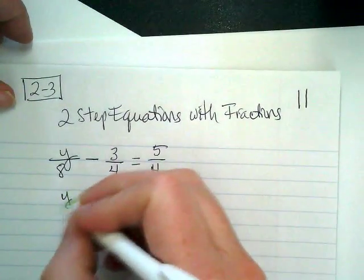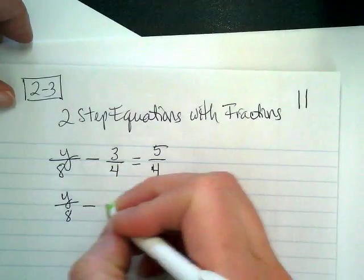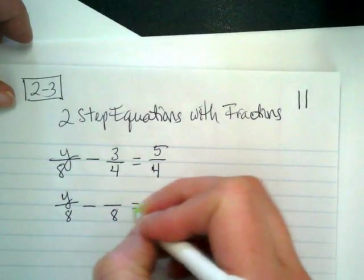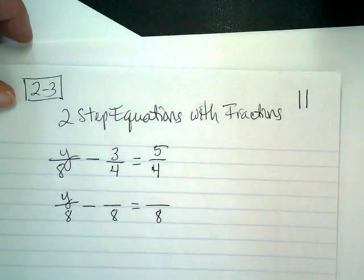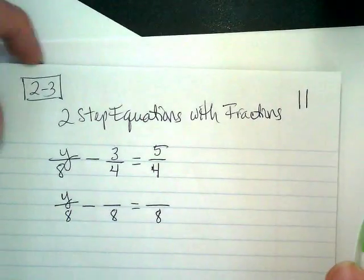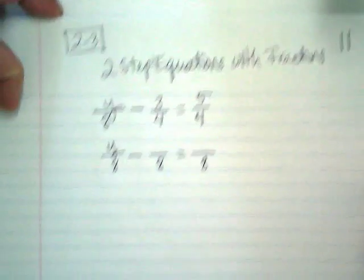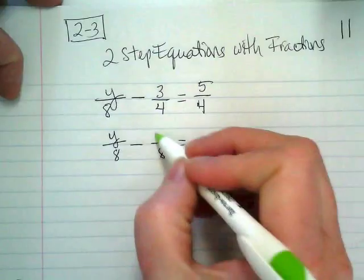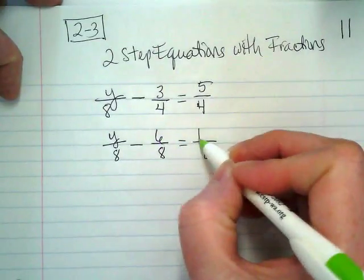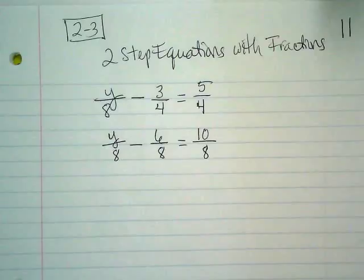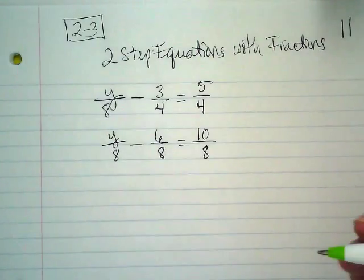So I'm going to rewrite this as y over 8 minus something over 8 equals something over 8. What am I going to change those numerators to? Six and ten. And then, now that they're like denominators, I can just start solving my equation.